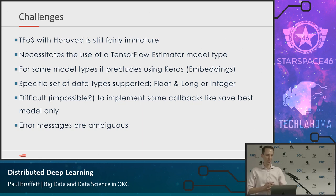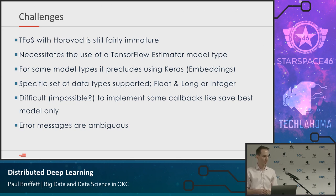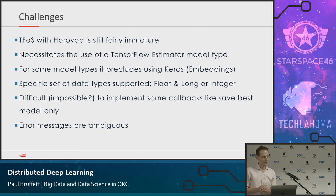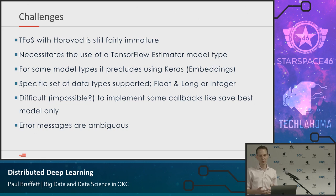TensorFlow on Spark with Horovod is fairly immature — the three-way union of TensorFlow, Spark, and Horovod is only a couple of months old. Horovod itself has only been around maybe a year, PyTorch has only hit its stride in the last year, and TensorFlow is the oldest at about three years. With TensorFlow on Spark, you have to use an estimator API, which limits the APIs you can use, though not the complexity of models you can build.